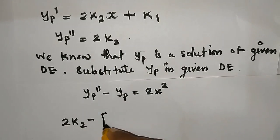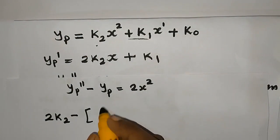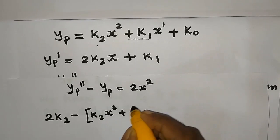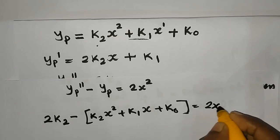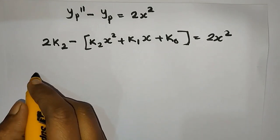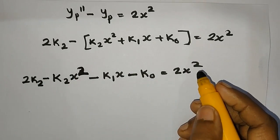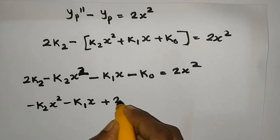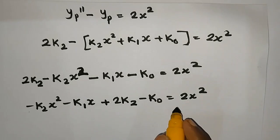Substituting into the equation: 2k2 minus (k2·x² plus k1·x plus k0) equal to 2x². Rearranging terms: minus k2·x² minus k1·x plus (2k2 minus k0) equal to 2x².